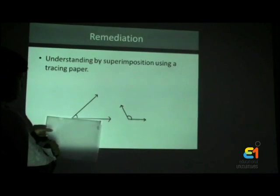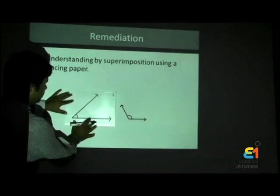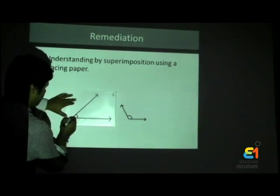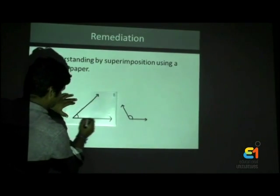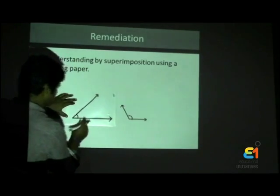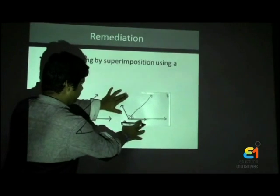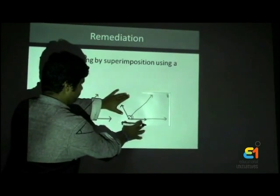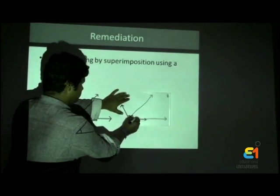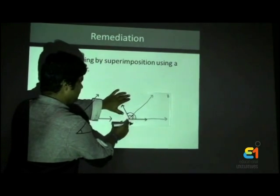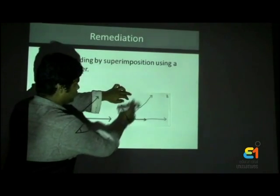This is a tracing paper. We place the tracing paper on top of one of the angles and draw its outline. We then place the tracing paper on top of the other angle to compare with it.